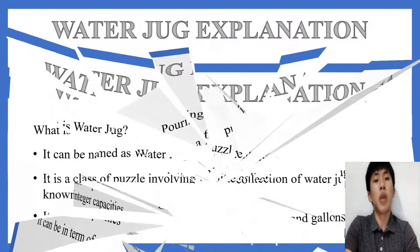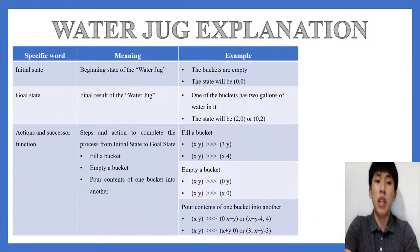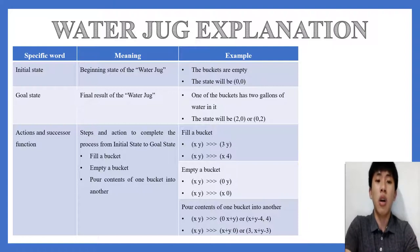Next we'll explain some specific words and their meanings. First is the Initial State, which is the beginning stage of the Water Jar problem. The Goal State is the final result we want to achieve. The Action and Successor function describes the steps and actions used to complete the process from Initial State to Goal State. There are 3 methods: fill a bucket, empty a bucket, and pour content from one bucket into another.